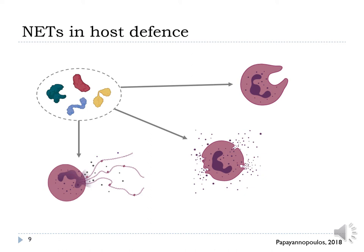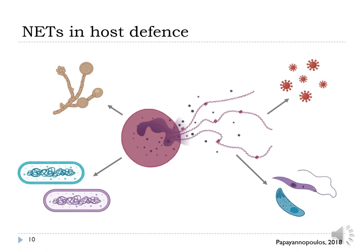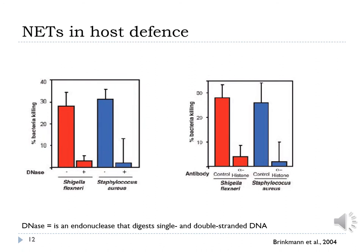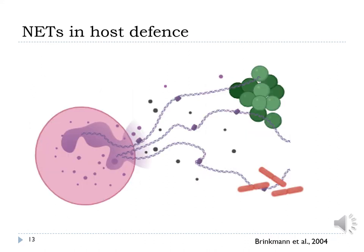Adding NETs in host defense, it has been difficult to define their specific contribution to immune response, given that most proteins implicated in NETosis are also important for phagocytosis and cytokine regulation. Studies demonstrated that NETs trap, neutralize, and kill bacteria, fungi, viruses, and parasites, and are thought to prevent bacterial and fungal dissemination. Brinkman and colleagues demonstrated that NETs associate with both gram-positive and gram-negative pathogens in vitro. They showed that extracellular bacterial killing was greatly reduced in S. aureus infections after incubation with DNase or antibodies against histones, demonstrating the importance of NETs for this process. This data strongly suggests that the fibrous structure of NETs is involved in the sequestration and killing of bacteria.